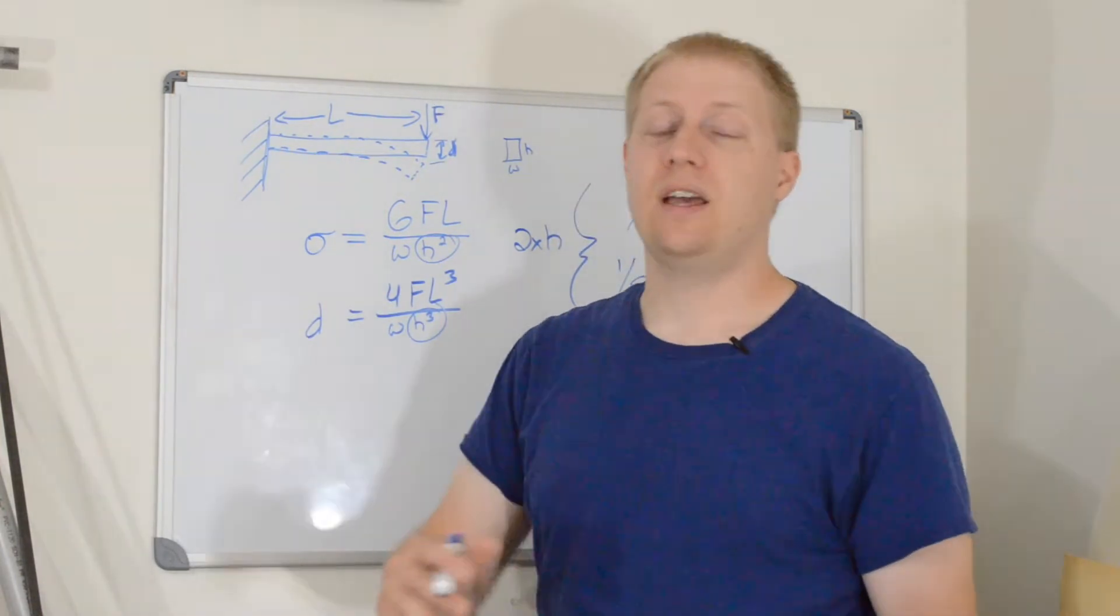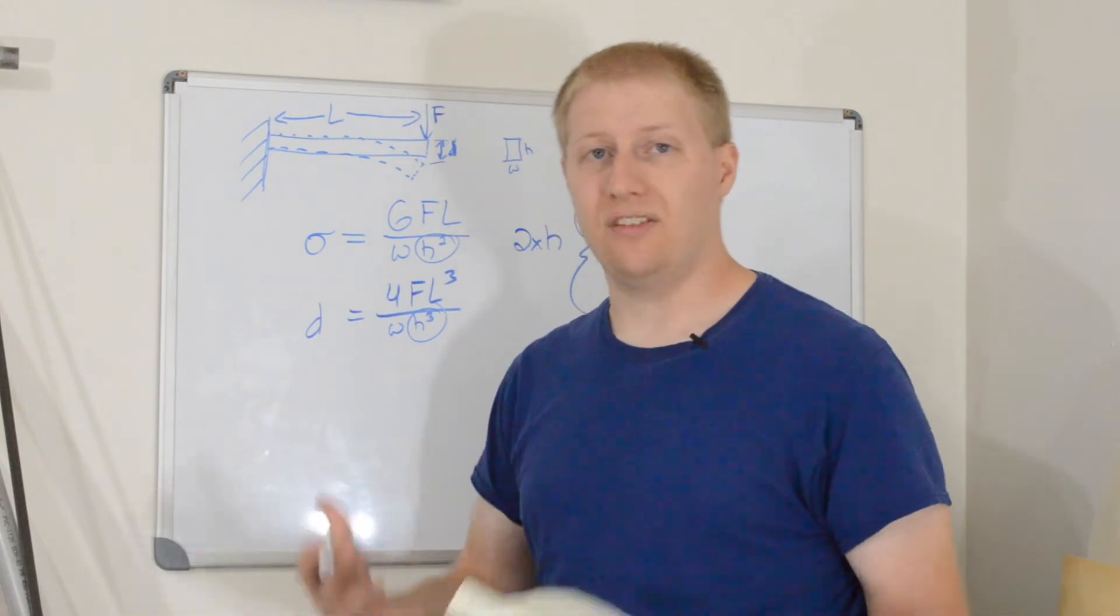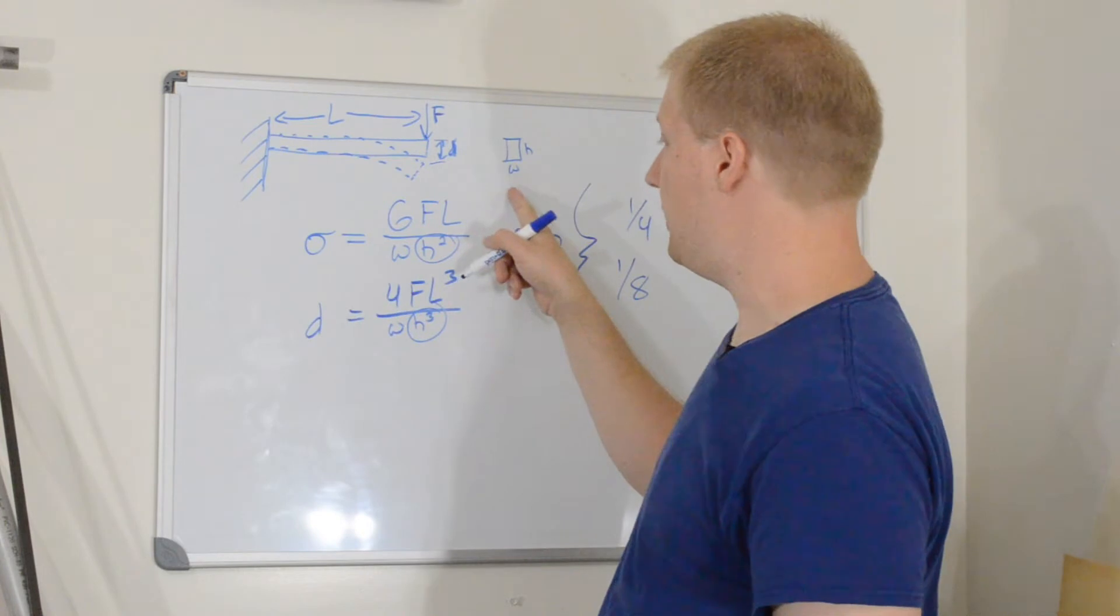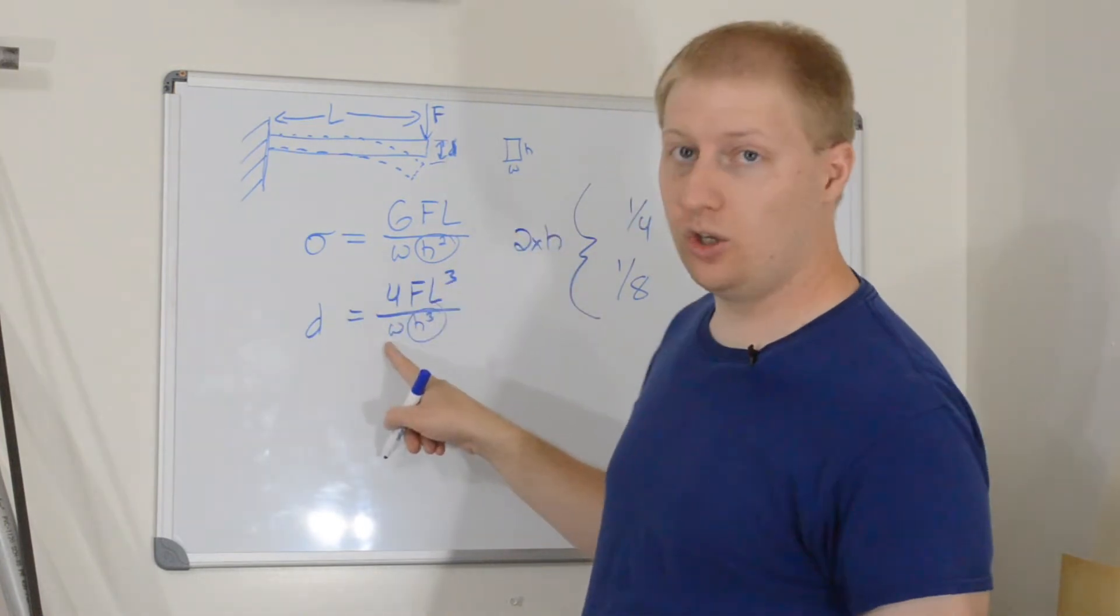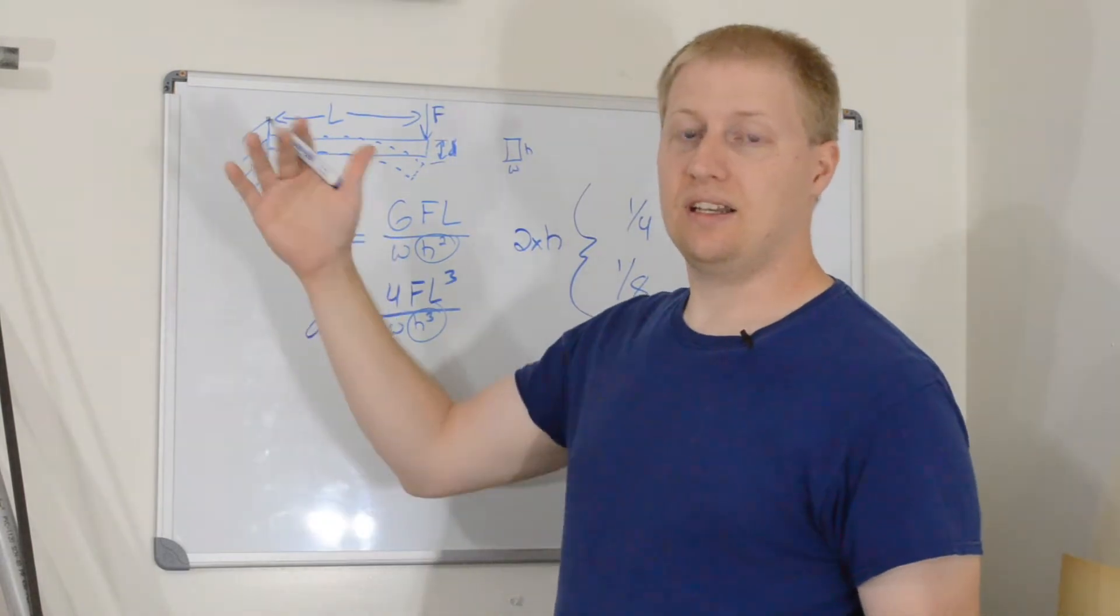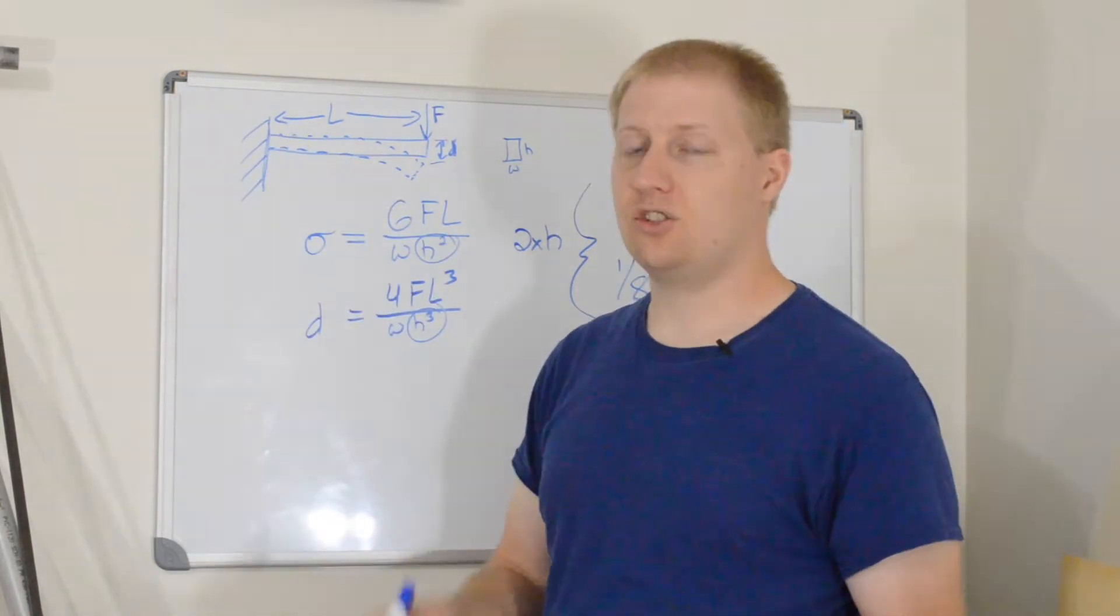So, if you want to make a beam that is strong but flexible, then you want it to be flat and wide. Because you look at the width of the beam, the width is not squared or cubed on both of them. Both the strength and the stiffness increase together as you increase the width.